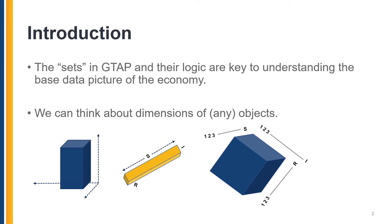But before we move to economic concepts relevant to the GTAP dimensions, let's first think about dimensions of any object you can see or imagine. Close your eyes and think about TVs, tables, and chairs in your room. Some more straightforward examples are cubes and cuboids, which are all three-dimensional shapes that categorize the length, width, and height of each object.